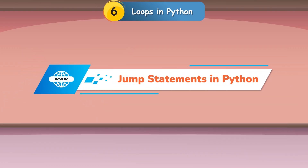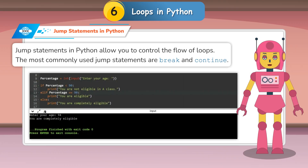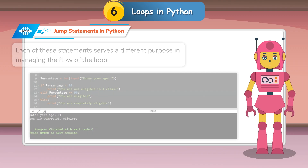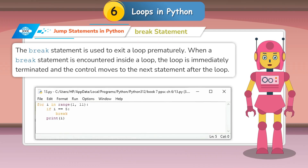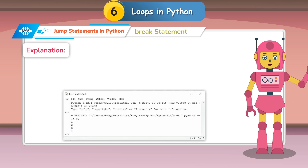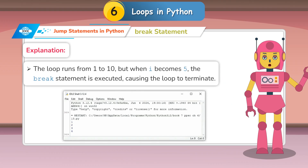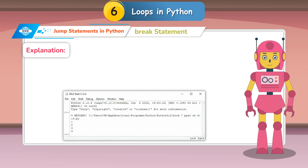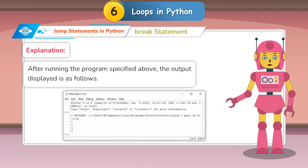Jump statements in Python allow you to control the flow of loops. The most commonly used jump statements are break and continue. The break statement is used to exit a loop prematurely. When a break statement is encountered inside a loop, the loop is immediately terminated and control moves to the next statement after the loop. Program 11 — exiting a loop when a condition is met: the loop runs from 1 to 10, but when i becomes 5, the break statement executes, causing the loop to terminate. Only numbers 1 to 4 are printed.